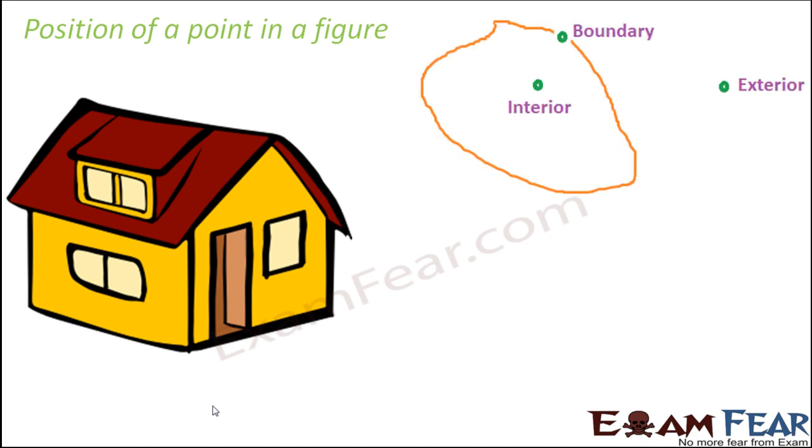In a similar way, when you talk about any closed curve, there are three possibilities for the position of a point. A point can be present outside the curve, a point can be present inside the curve, and the point can be present on the boundary of the curve.